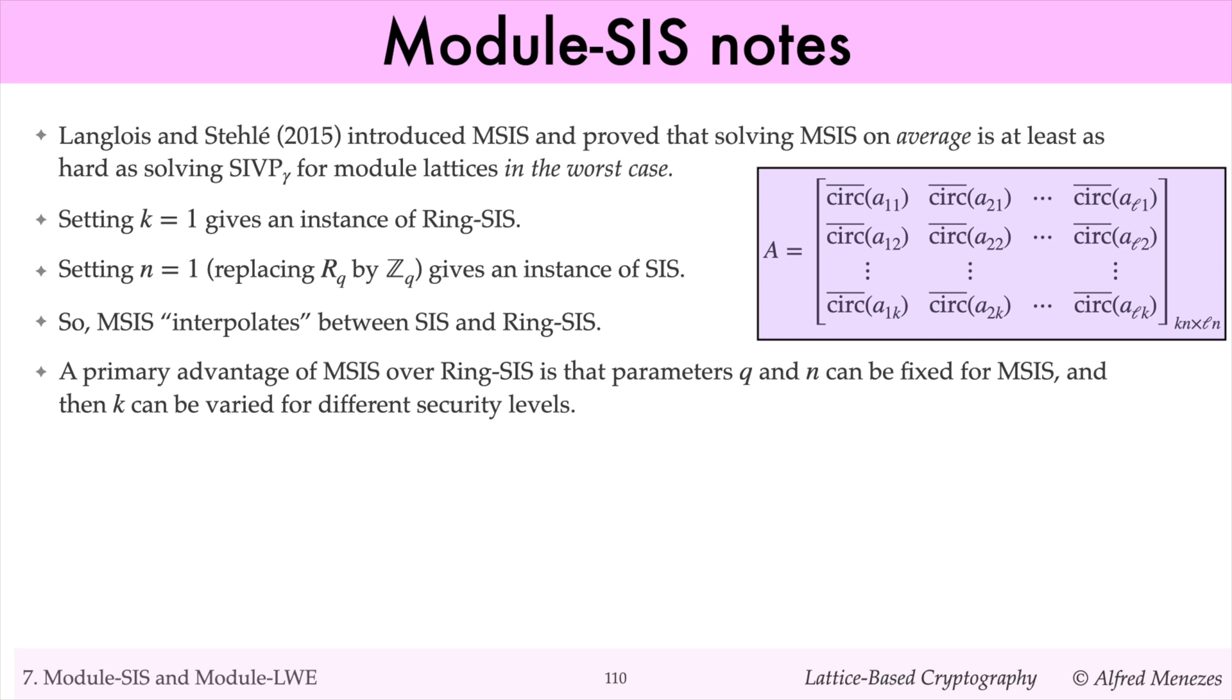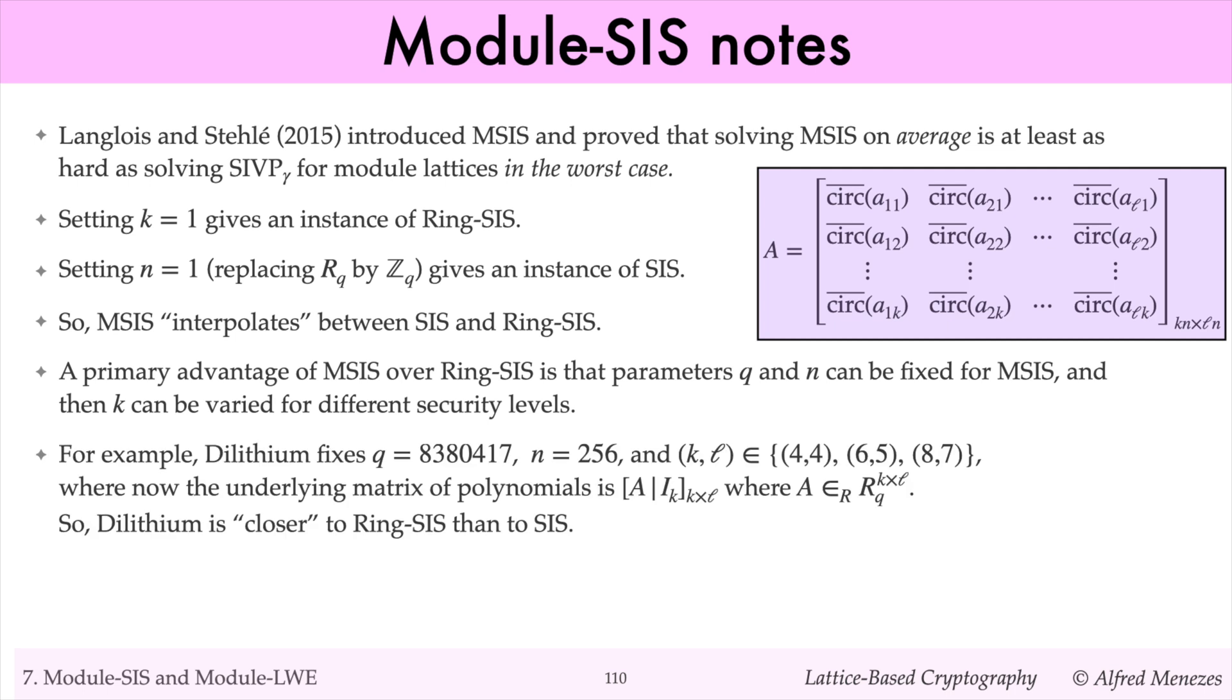A primary advantage of module SIS over ring SIS is that the parameters q and n can be fixed, and then the parameter k can be varied to achieve different security levels. For example, Dilithium fixes q to be roughly 8 million and n to be 256. The kl values are 4, 4, 6, 5, and 8, 7,